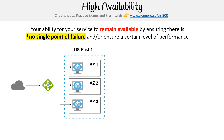The idea behind this is that if you have a server which runs your web application, if you run redundant versions of your server, if anything happened to a single server, traffic could always be routed to those other servers. And that way, your service would remain available.